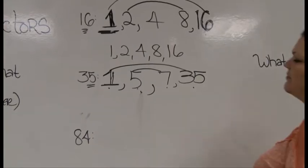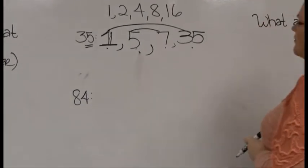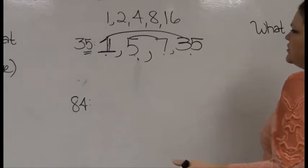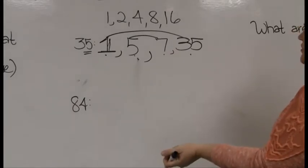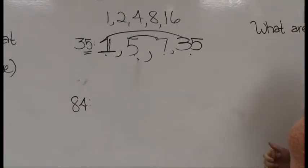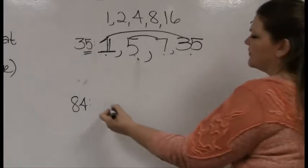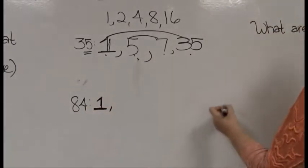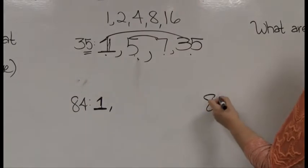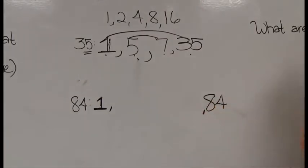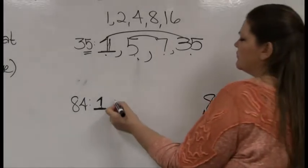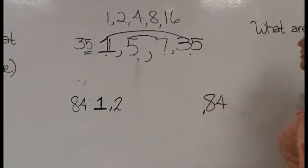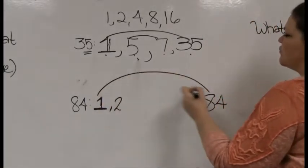We'll do one more, which scares a lot of people because it's so large, but I wanted to show you that it's not that scary with the rainbow because it closes in on itself pretty quickly. Let's give it a try with 84. Always start with 1, end with the number itself. I'm going to leave some space here.